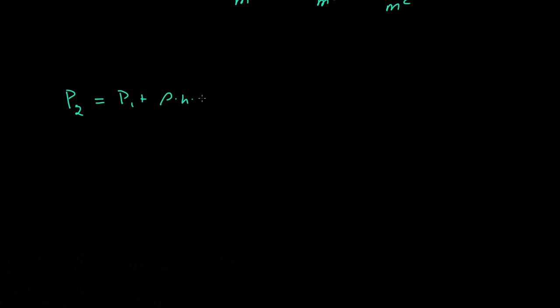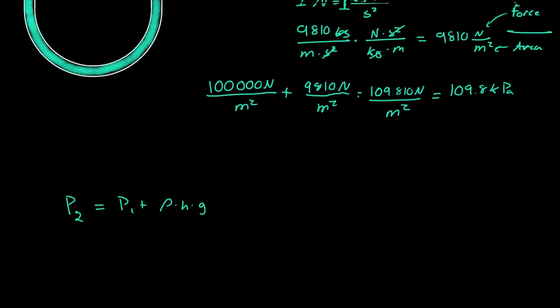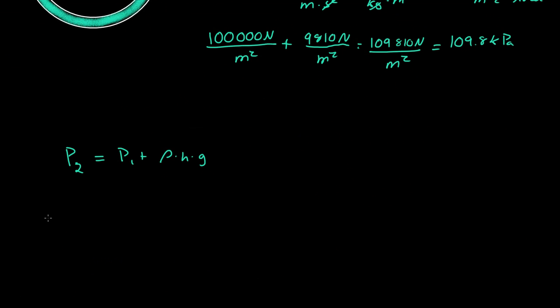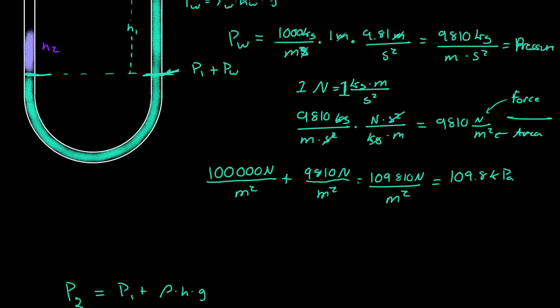So what happens if we had another fluid on one side? That fluid would have its own height - call it height two. So then P2 plus the density of the new fluid times h2 times the gravitational constant is equal to...